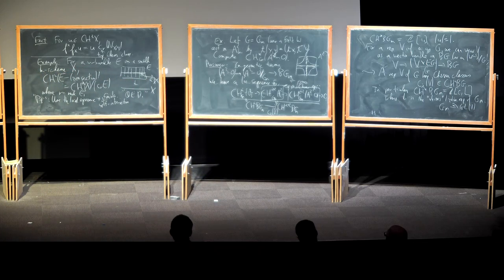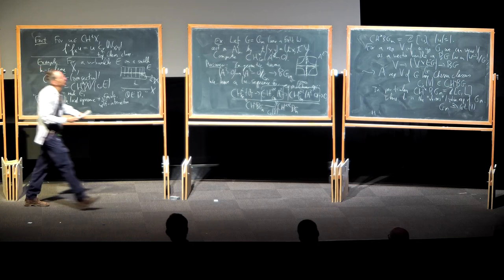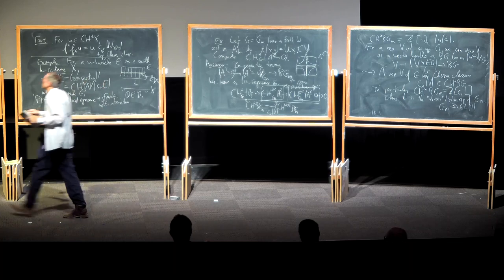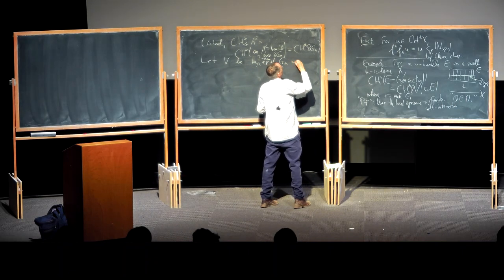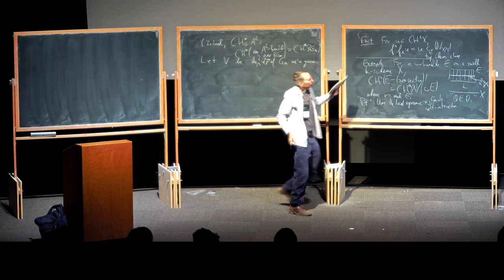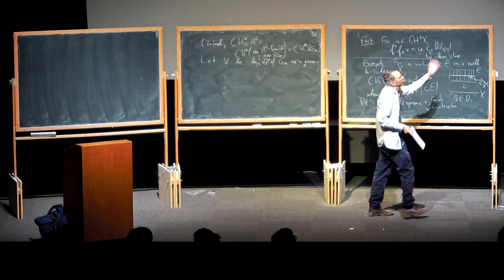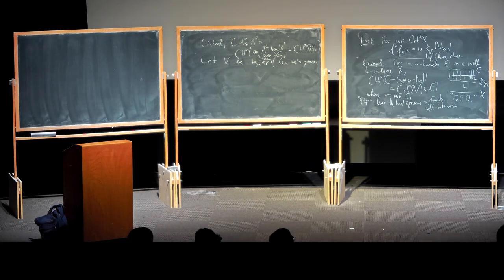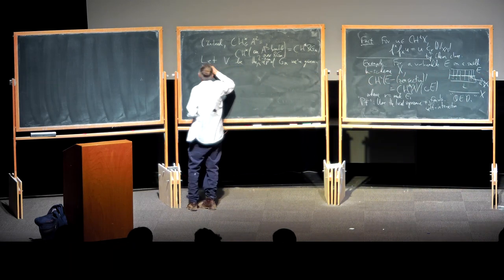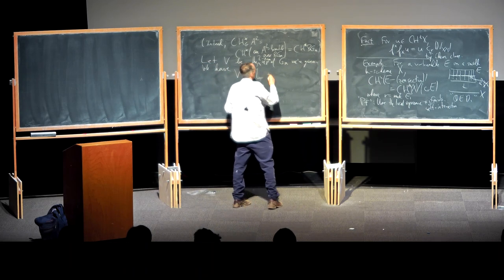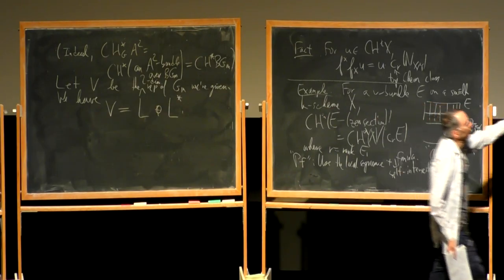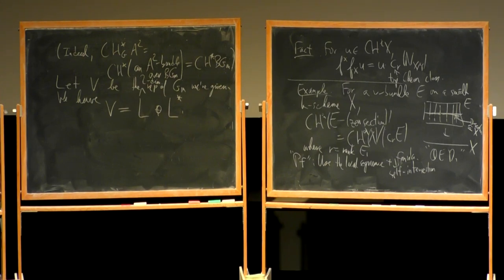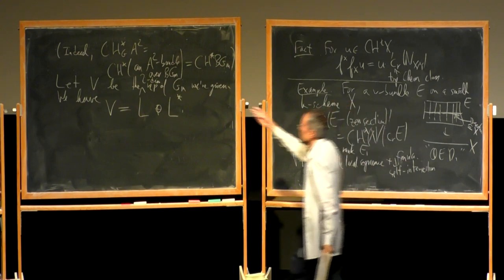Let V be the two-dimensional representation. What is this rank-two vector bundle? It is the vector bundle associated to this two-dimensional representation of our group. How do we compute c_2? Well, this representation is the direct sum of two one-dimensional representations — weight 1 and weight -1. The weight -1 representation corresponds to the dual of the basic one-dimensional representation. So you have the basic one-dimensional representation plus its dual.